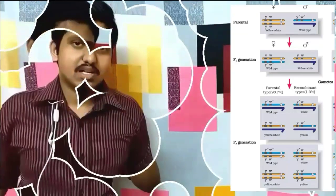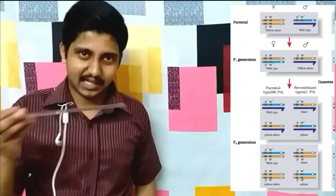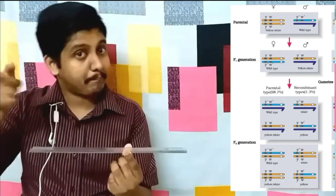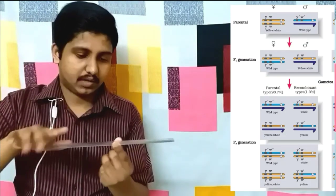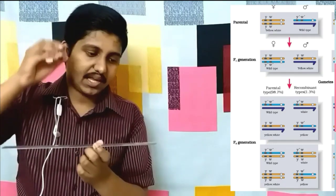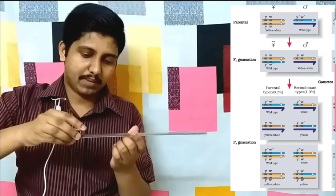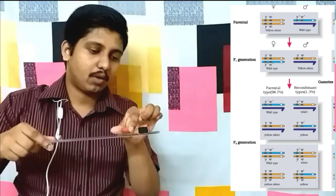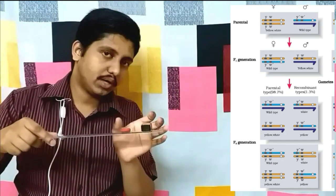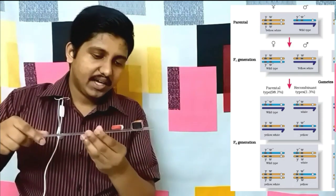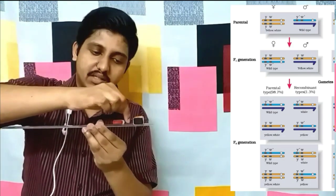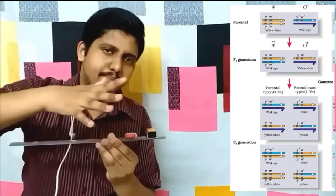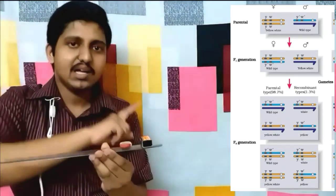To illustrate this, imagine a 30 cm scale representing the X chromosome. If body color is at the 2 cm position and eye color is at the 8 cm position, they are very close together. It is very difficult to break between such a small gap — just as it's easy to break a ruler in the middle but hard to break it near the edge.